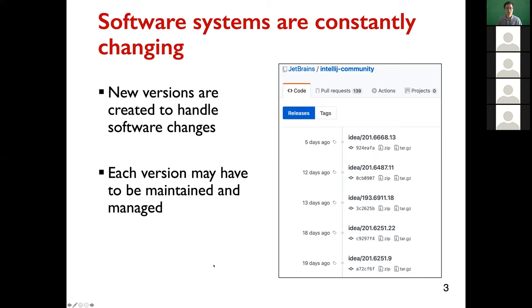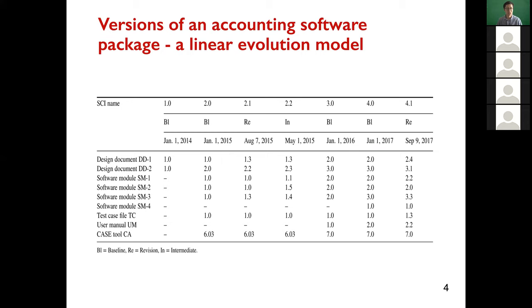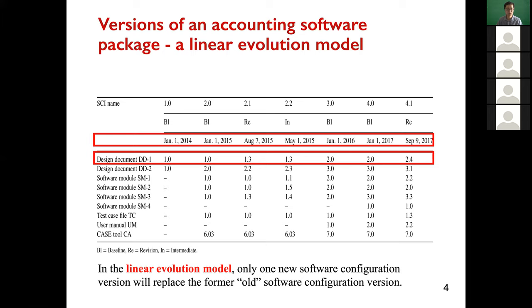Let's look at a more concrete example. These are the versions of an accounting software package. We're looking at a linear evolution model. The first row shows the timeline, the second row shows the versions of one document. As time evolves, we may have different versions, but usually only one new software configuration version replaces the former older version.